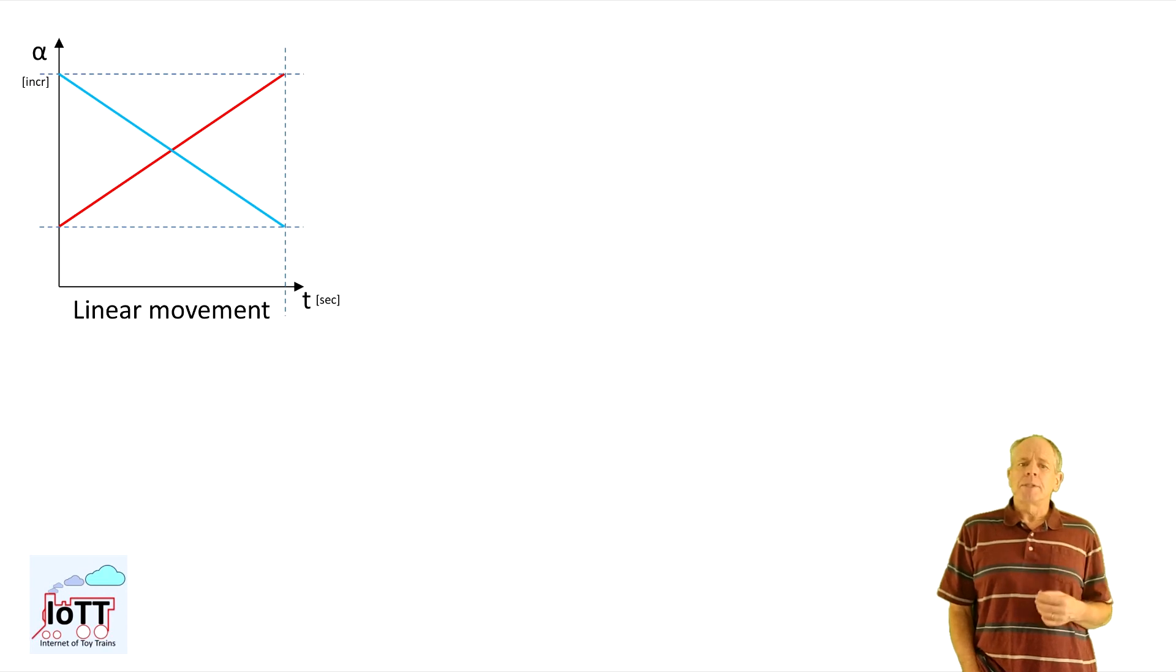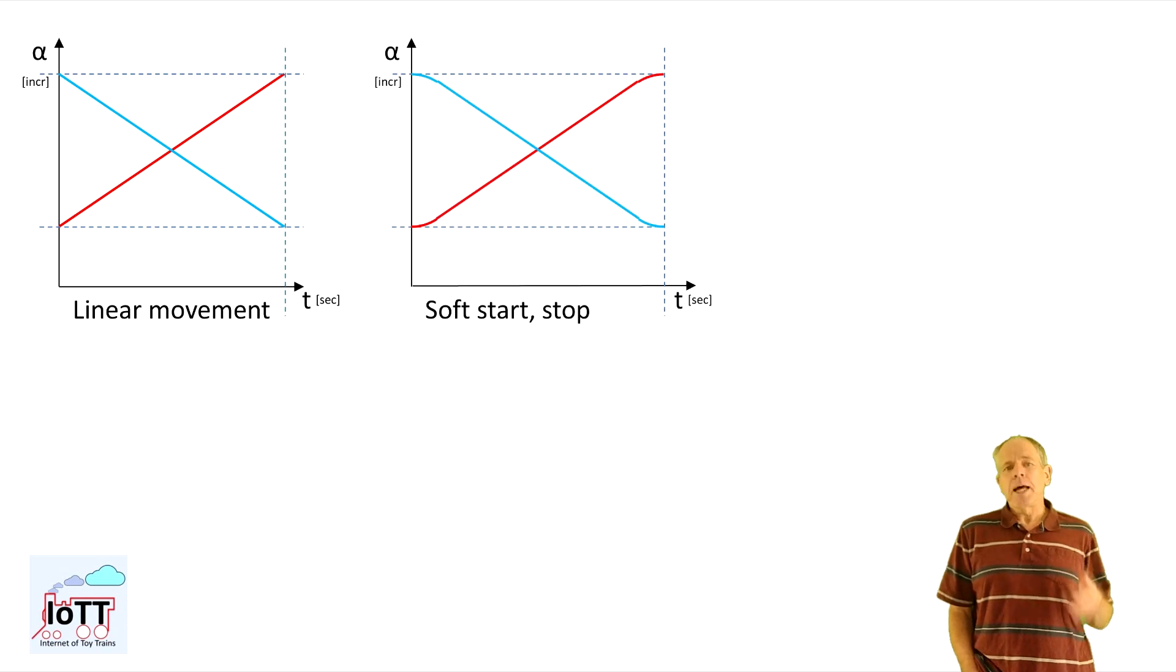The new requirements now call for nonlinear movements, which means the slope is changing along the path because there is acceleration or deceleration. This could be as simple as a soft start and soft stop, where there is just an acceleration and deceleration phase at the beginning and end of the movement.